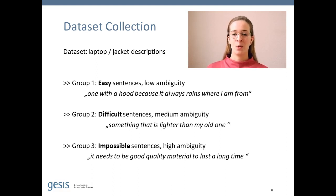The important part here is that we ended up with three groups of sentences with low, medium, and high ambiguity. Sentences that are easy to classify for humans, difficult to classify for humans, and sentences that are impossible to classify for humans.